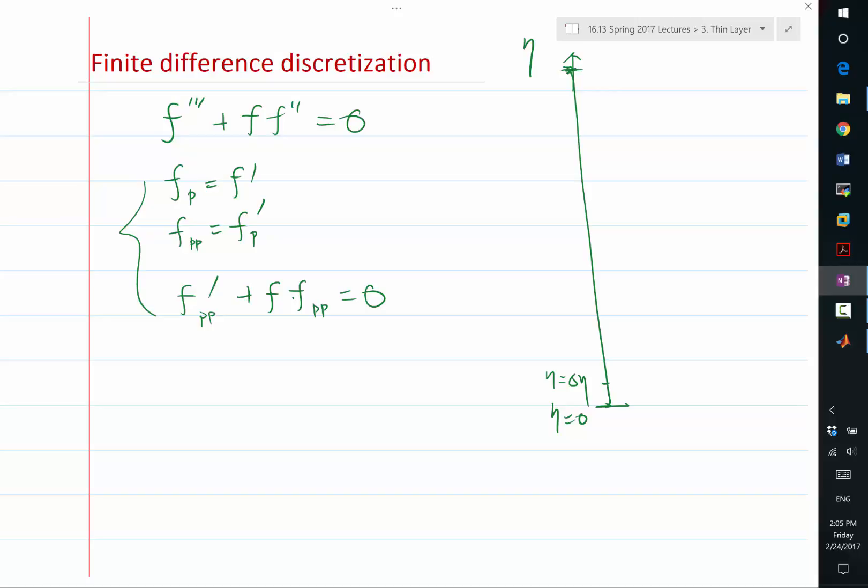So we have this grid. And let's start discretizing these three equations. On every grid point, we are going to store what is the value of f. Actually, we are going to use MATLAB, so we know it has f1. If you use Python or C, it should be f0, f2, et cetera. We are going to store fp1, fpp1, and fp2, fpp2, et cetera.